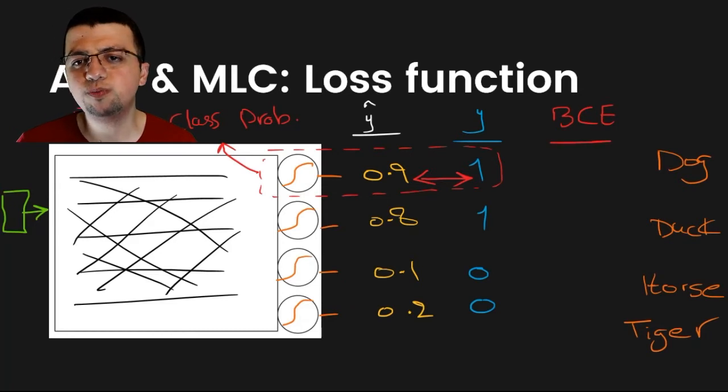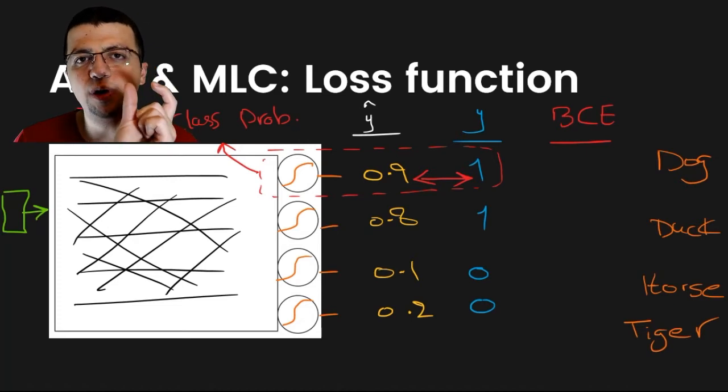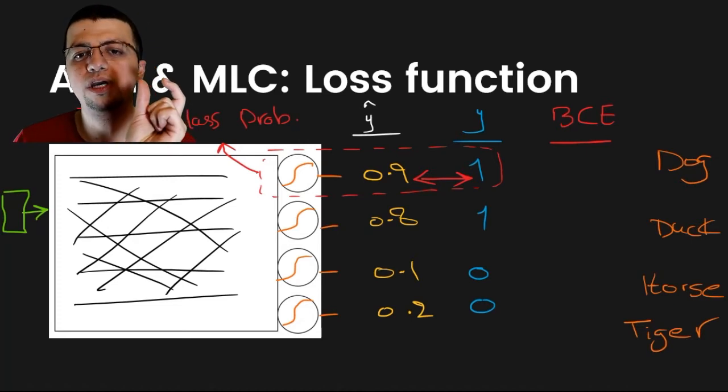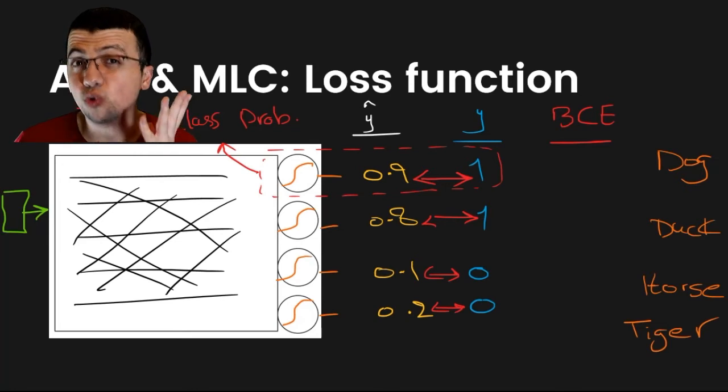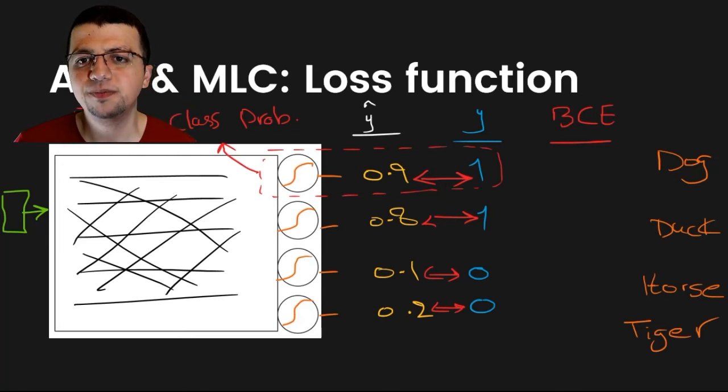So, what you do is you use binary cross entropy function to compute the difference between each corresponding two elements in your y hat vector and your y vector, meaning that you compute the difference between 0.9 and 1, and then you compute the difference or the distance between these two, between these two, and between these two.